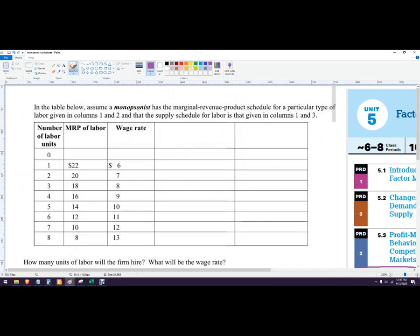Alright, in the table below, assume a monopsonist. What does that mean? It means a single buyer, and in this case, what we really mean is a single employer, because this is a labor market. So this is when monopsonies will be most likely to happen, a particular type of labor in columns 1 and 2.